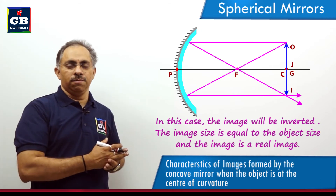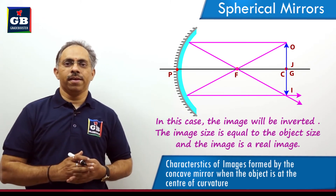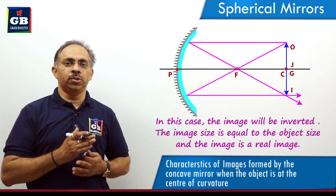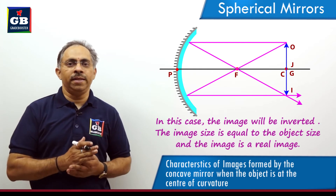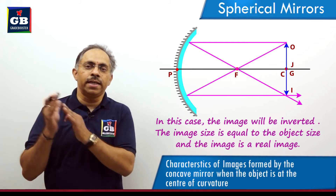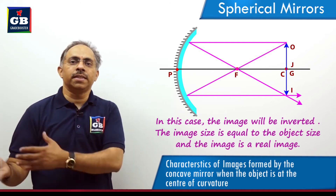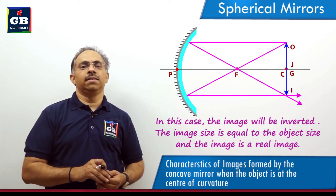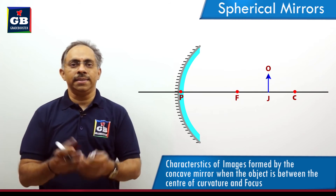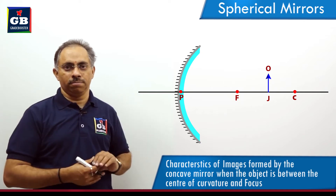The properties of the image when the object is placed at the center of curvature: the image formed is inverted, it is real — meaning if you place a screen at the center of curvature position you will observe the image — and it is equal in size to the object. The image size has gradually increased from diminished to now equal to the object.